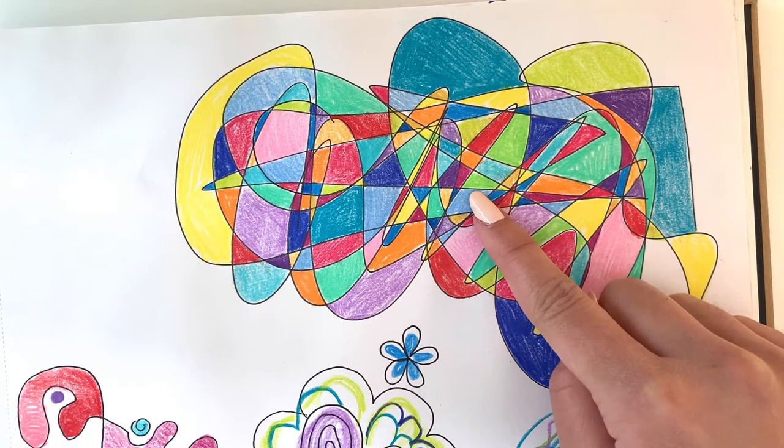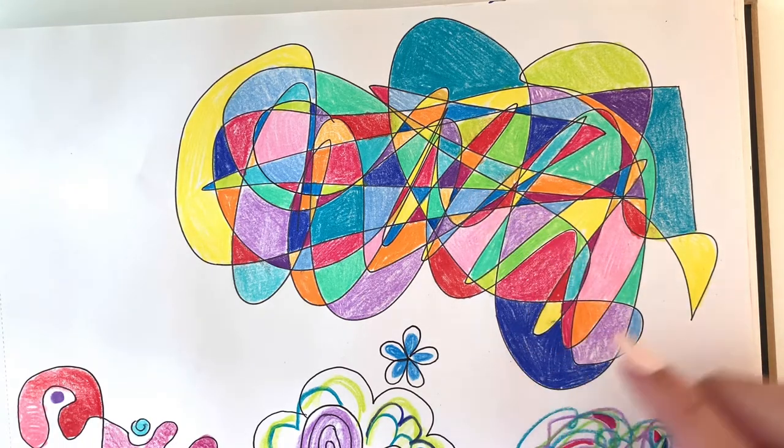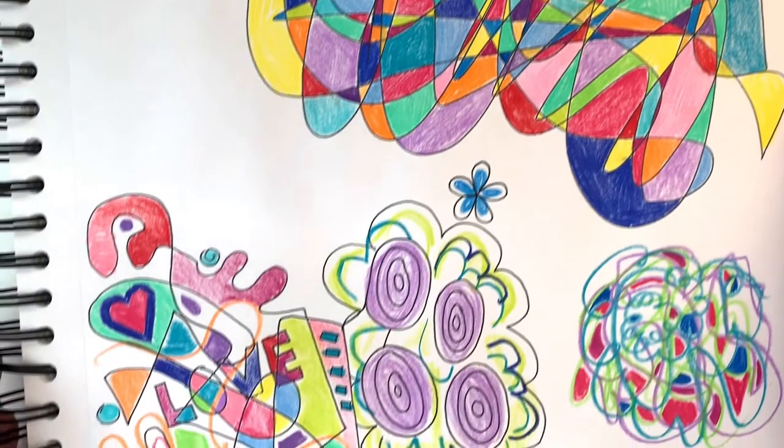Here are some examples of scribbles you can do. The first scribble is one continuous line where the shapes can be colored in.